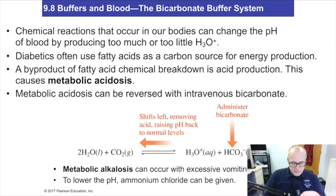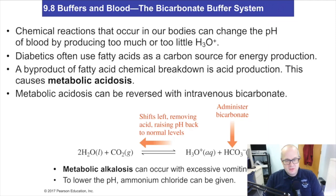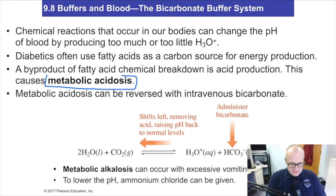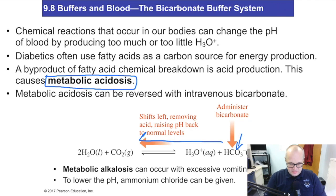There are chemical reactions in your body that can also increase the acidity. For example, diabetics will often use fatty acids as their carbon source, and that will cause the acidic nature of your blood to increase as well. That's called metabolic acidosis — when your food digestion causes your pH to change toward acidity. To treat this, you just increase the concentration of bicarbonate to drive the equilibrium to the left — that's Le Chatelier's principle.